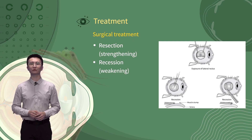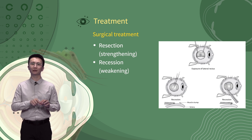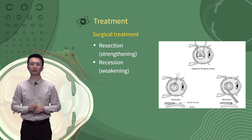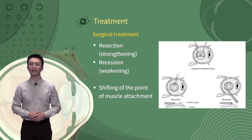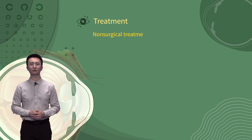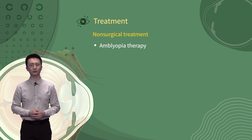Strengthening or weakening the extraocular muscles by surgical recession or resection is the most common treatment to align the eyeballs. For example, for patients with esotropia, we usually weaken the medial rectus muscles and/or strengthen the lateral rectus muscles. In addition, shifting of the points of muscle attachment can also create or alter the rotational action of muscles. The choice of muscles and the surgical extent are determined by the direction and amount of misalignment and the function of extraocular muscles. Non-surgical treatment of strabismus includes treatments of amblyopia, the use of optical devices, drugs, and training.